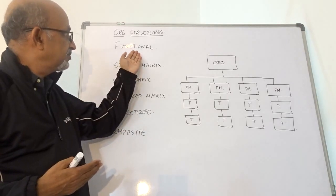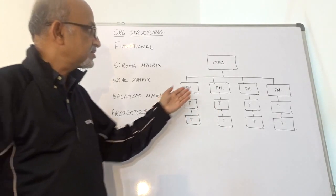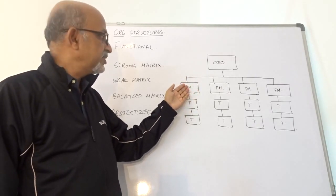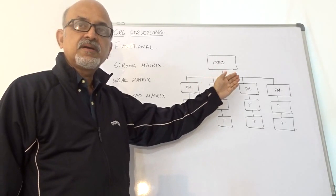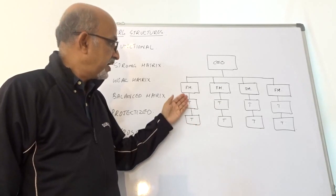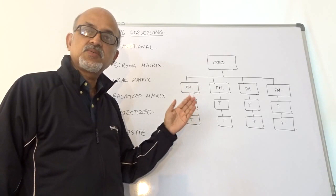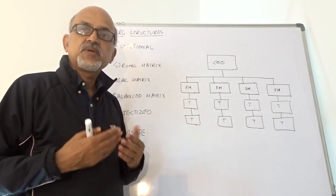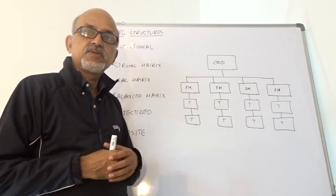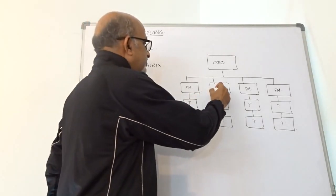Let us take a look at the functional organization. What is given in the diagram here right now is a functional organization, where we have the CEO, we have the functional managers like VP Marketing, VP Production, VP Design, VP HR. The sponsor will be the FM Manufacturing.